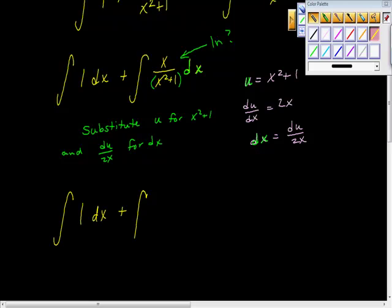Plus, now I'm going to do my substitution. I have x over, I said I'm going to put in u for x squared plus 1, so I'm going to put u here. I'm going to replace dx, because dx is du over 2x. Du over 2x.